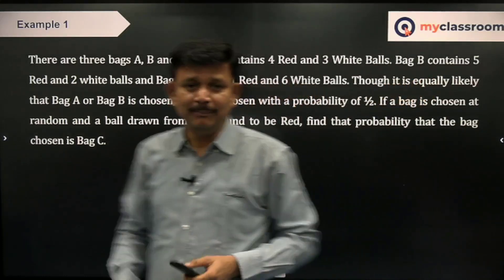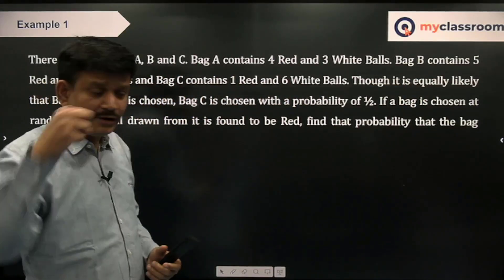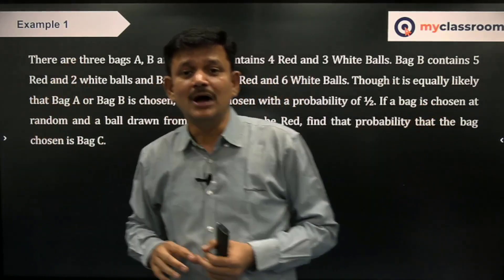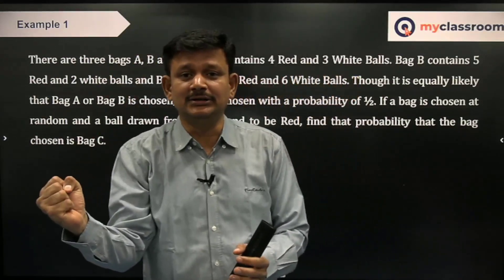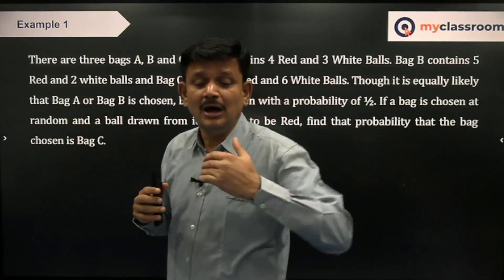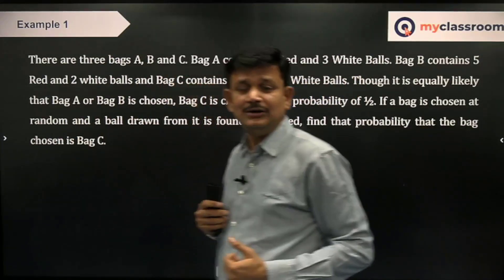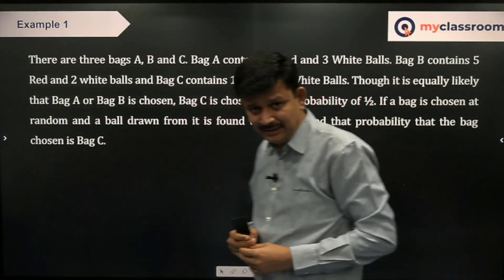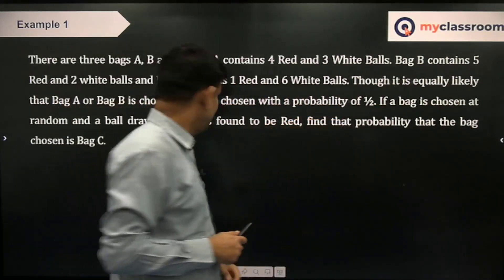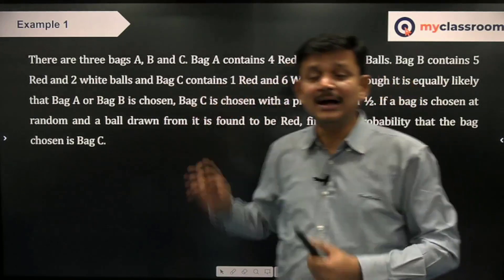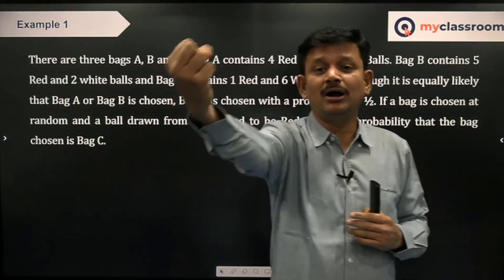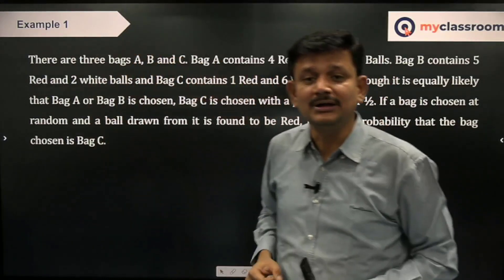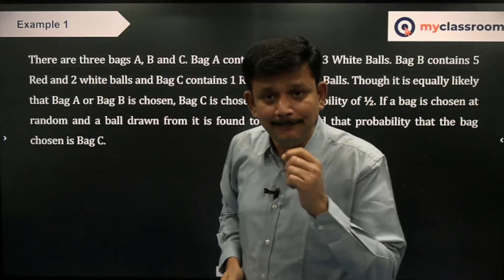Now what is the question? If a bag is chosen at random and a ball drawn from it is found to be red — you have made choice A, B, or C, I do not know which one — you told me it is a red ball. Now I have to guess whether it was from bag A, bag B, or bag C. Given that the ball is found to be red, the final outcome is given — find the probability that the bag chosen is C. So this is a question on Bayes' Theorem.